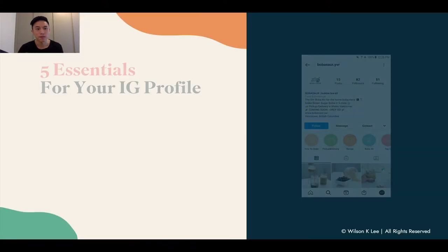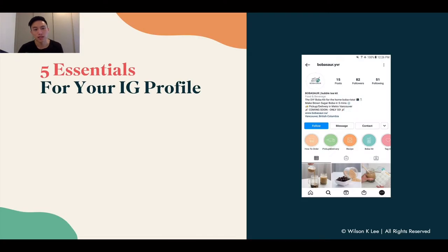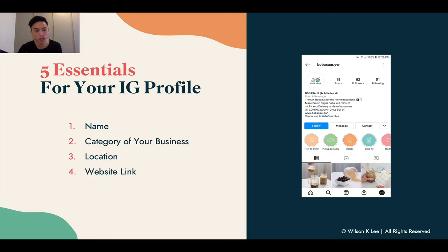The five essentials for your Instagram profile: first up, your name; next up, category of your business; location; website link; and bio description. We're going to be diving deep into each of these essentials right now.